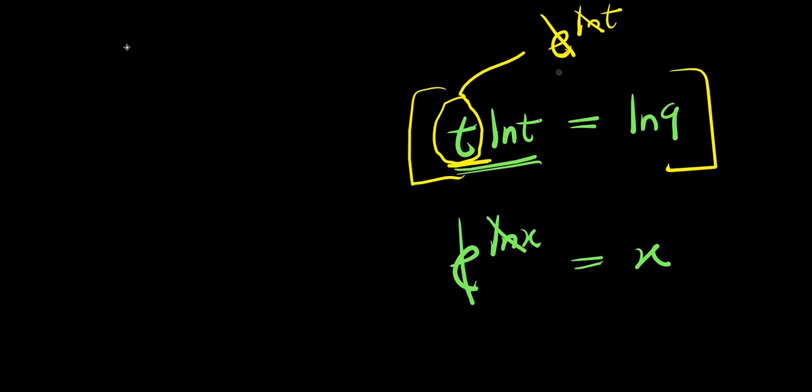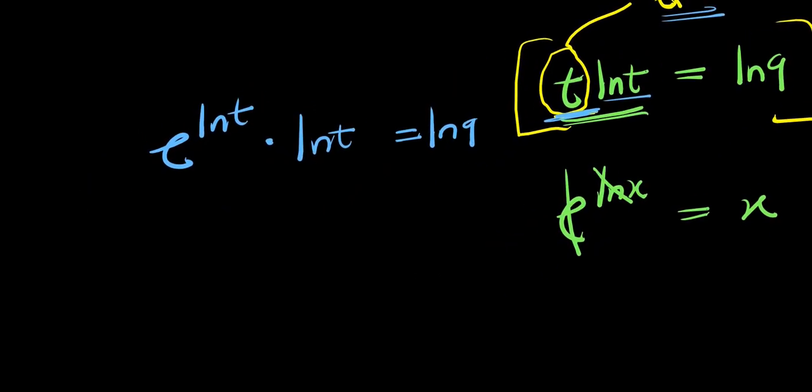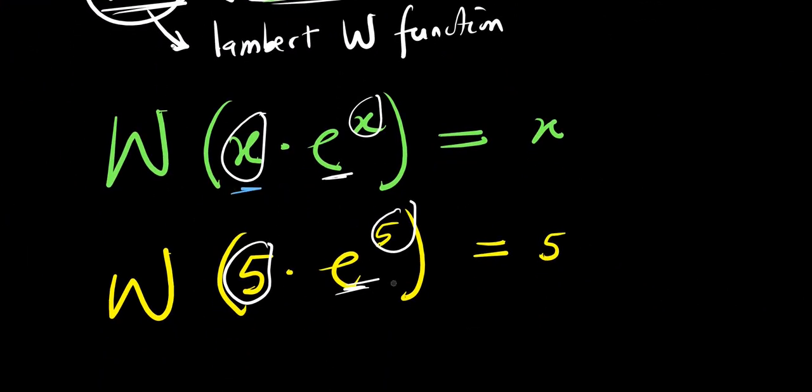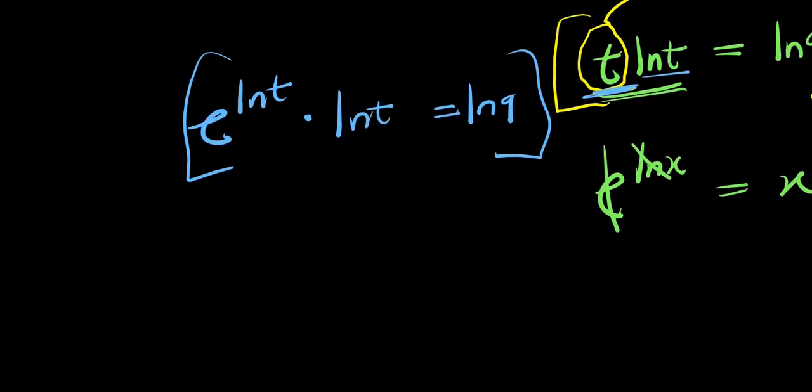Instead of writing t here, I'm going to replace it with e power ln t. That replaces the t, then I have times the ln t here, and this equals the ln 9. So the next thing we are going to do will be to rearrange this, because it must correspond to x before e power x. We have e power ln t before ln t, so it needs to be ln t before e power ln t. So we have ln t times e power ln t, and this equals ln 9.